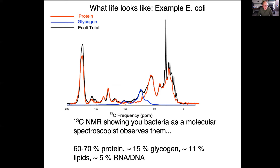I'm also a solid-state nuclear magnetic resonance spectroscopist. I collected a C13 solid-state NMR spectrum of dry E. coli, where every peak corresponds to a carbon in a specific electronic bonding environment. In red I highlighted carbon in protein, in blue the carbon in glycogen, and black is the total E. coli spectrum. For simple prokaryotic organisms we're talking about 60–70% protein, roughly 15% glycogen as a storage sugar, 11% lipids for the membrane, and the remainder largely ribosomal RNA.